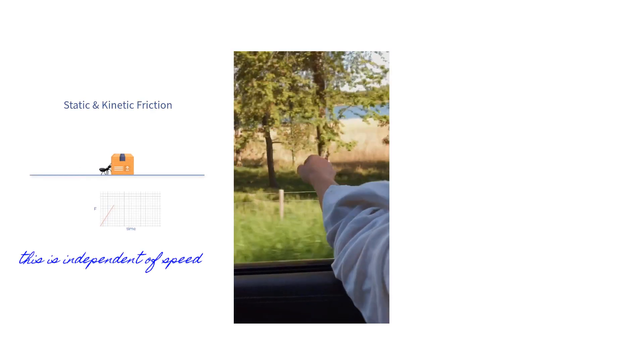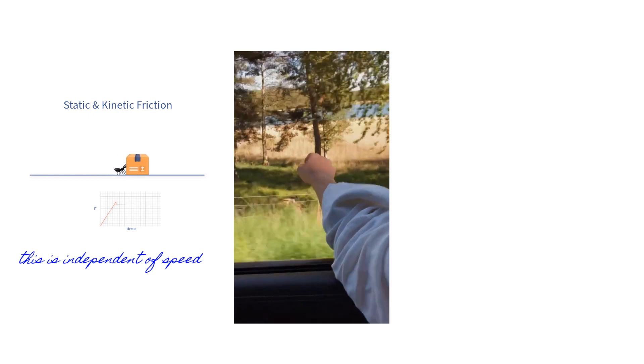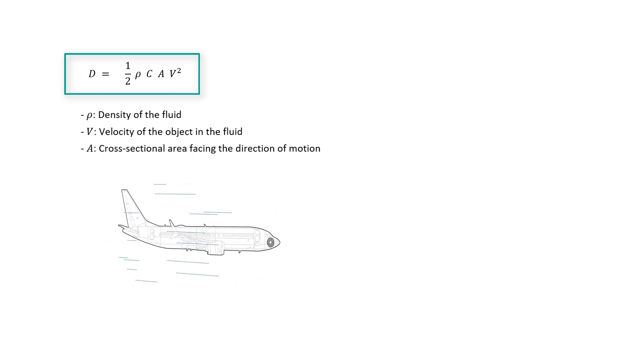So this force is called the drag force, usually represented with the letter D and is given as D equals half C rho A V square, where rho is the density of the medium through which the object is moving. V is the velocity of the object. A is the cross-sectional area of the object moving through the medium that is perpendicular to velocity V. So if an object is moving like this, then the area A to be considered is this only.